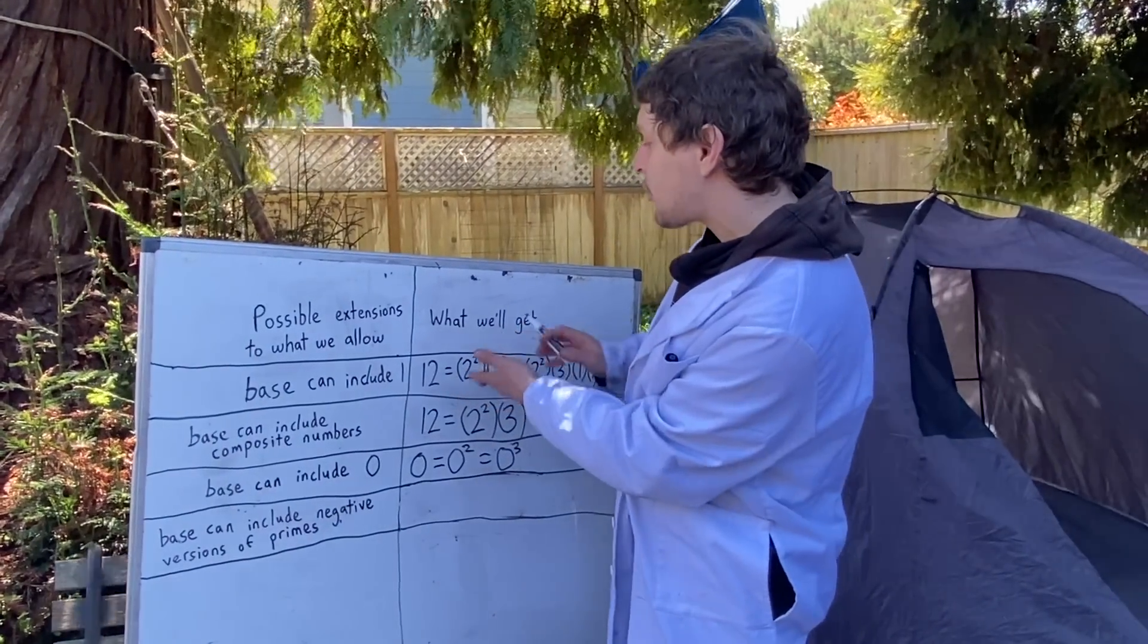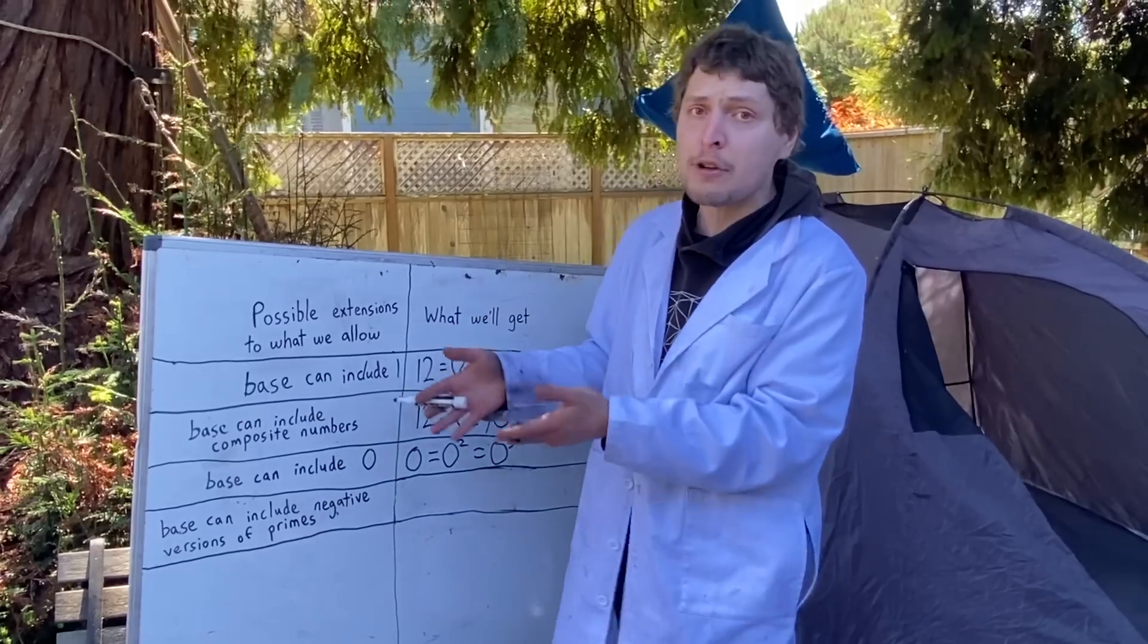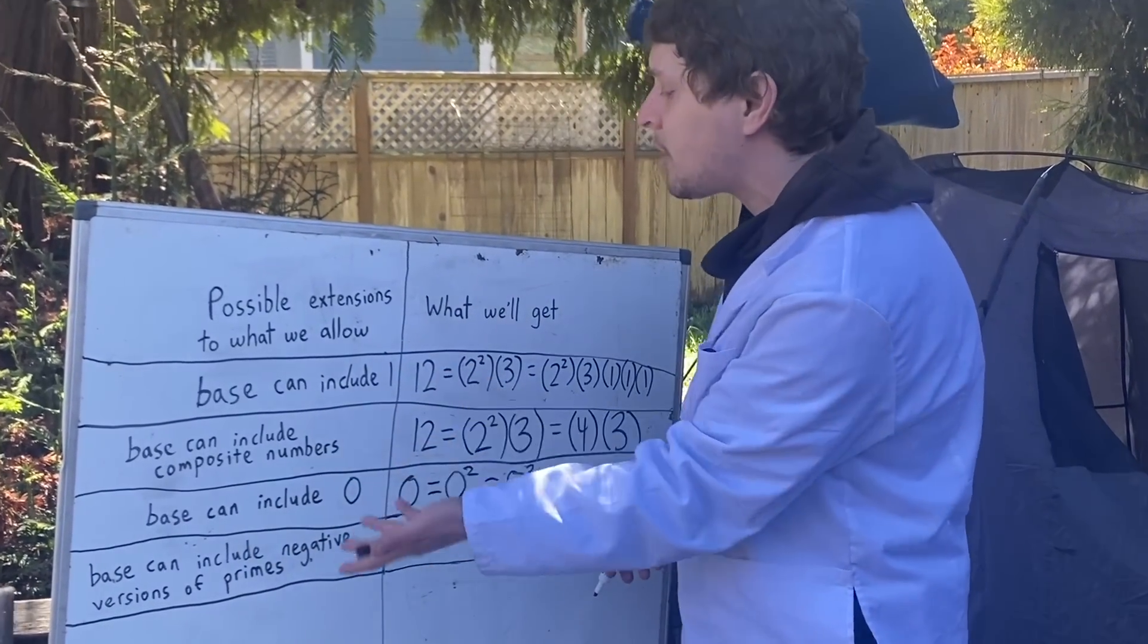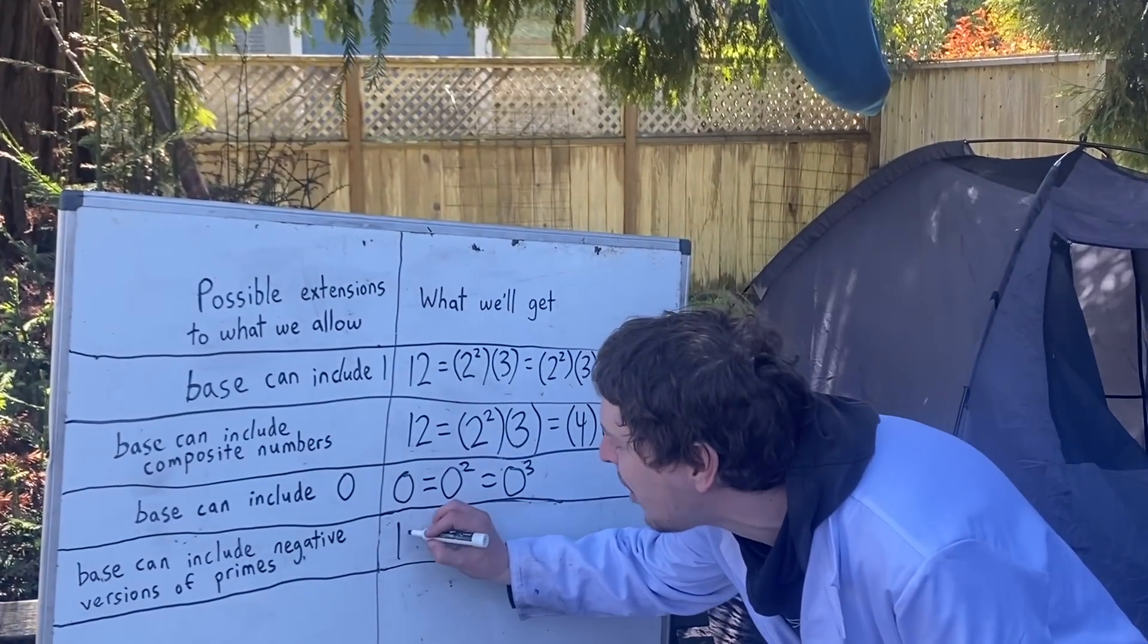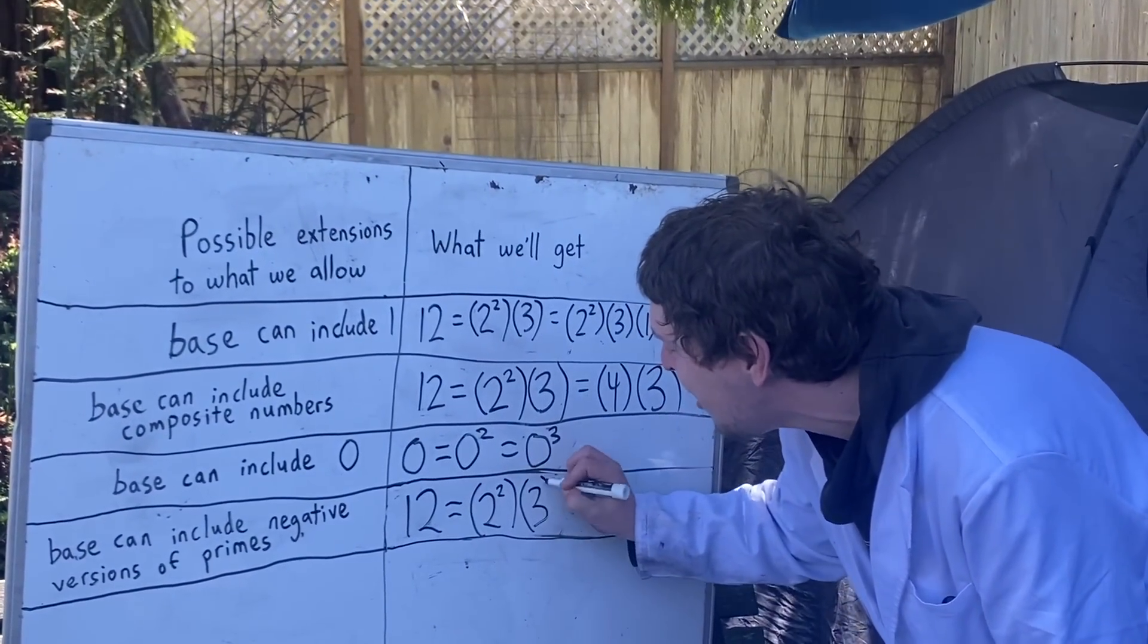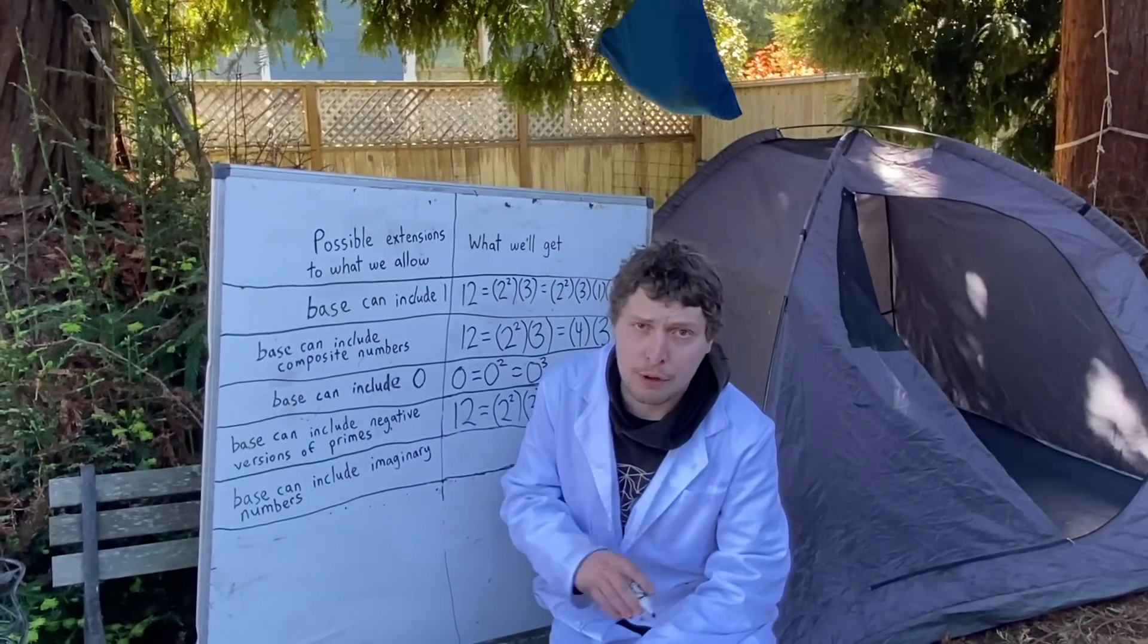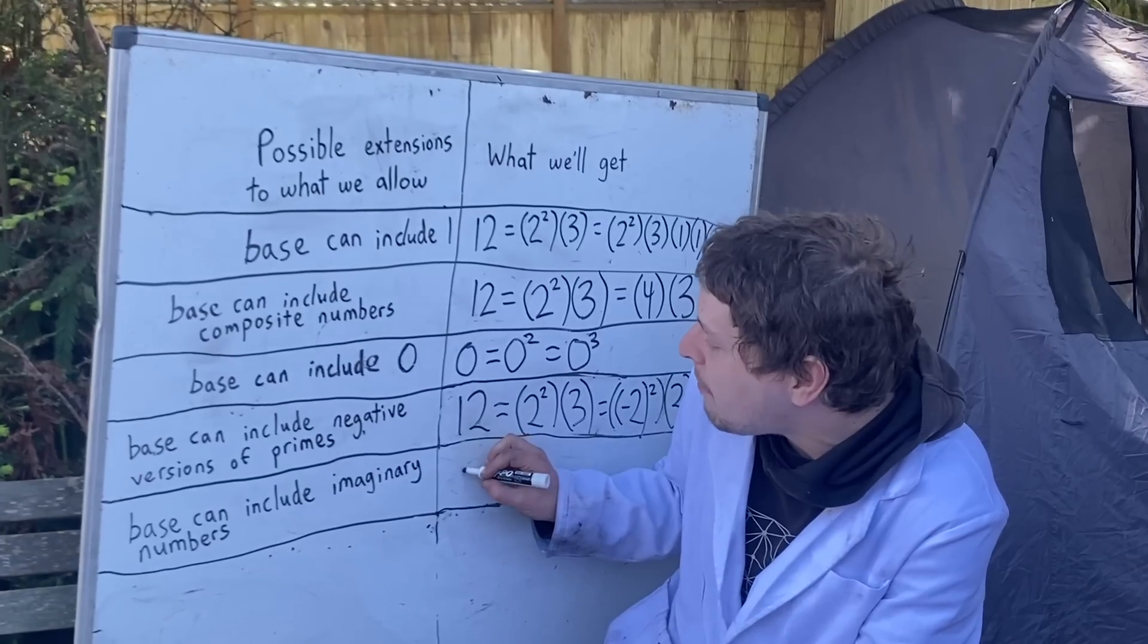Now, since prime factorizations can only describe positive integers, and we attach a minus or negative symbol after the fact if you want to change the sign, you might wonder what if the base numbers tried including negative versions of primes, and then you raised those to powers and got the negativeness in there right away. But we're going to hit more double representations, like 12 could be written 2^2 × 3, or could be written (-2)^2 × 3. We'll hit an even worse version of that problem if we let a base number be imaginary, like having one of them be i, because imaginary numbers move in a cyclical pattern when you apply exponents to them.